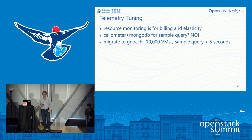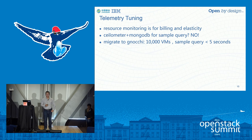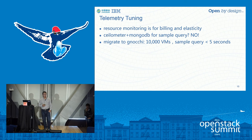For telemetry — Ceilometer — it is very important for the China Mobile deployment both for billing and for scaling VM clusters. According to our profiling results, the Ceilometer plus MongoDB combination is virtually not usable at scale. So we migrated to use Gnocchi. After this shift, we can now get sample queries in less than five seconds for a 10,000 VM deployment — a huge improvement.